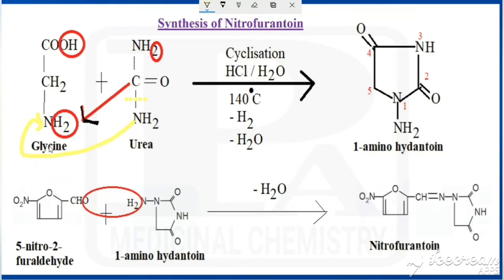For the synthesis, we are taking two starting materials: one is called glycine and the other is called urea. Glycine is an amino acid, so it has two ends — one is an amino end and another is an acid end. Its structure has COOH on one end, NH₂ on the other end, and CH₂ in the center. This glycine combines with urea.